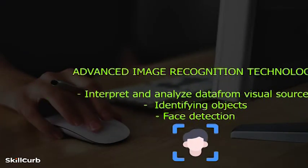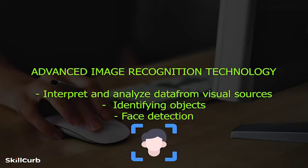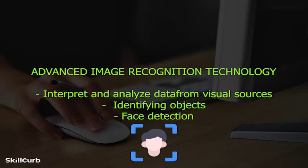Mobile phones lately use advanced image recognition technology and are able to interpret and analyze data coming from visual sources for a number of uses, such as identifying objects in autonomous cars, face detection for security purposes, and much more. Today, let's learn how to use our mobile phone camera to import data into Excel.